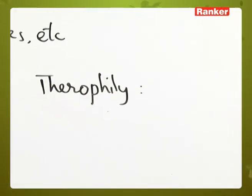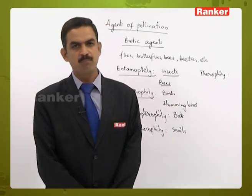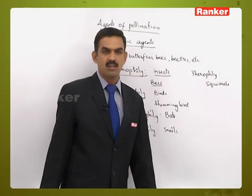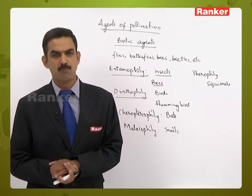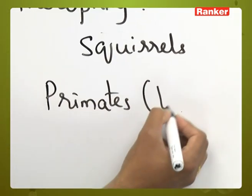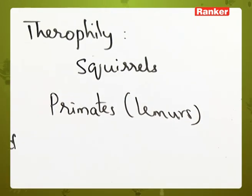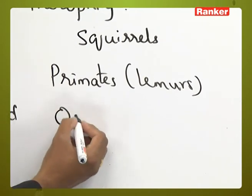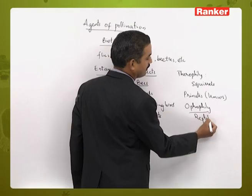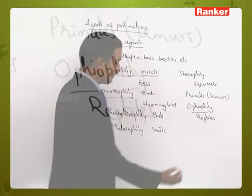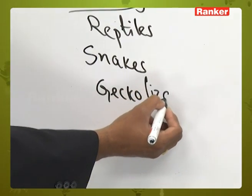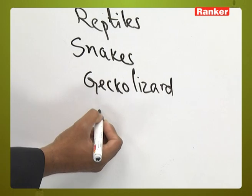Therophily involves plant-dwelling animals (arboreals) such as squirrels helping in pollen transfer, as well as primates like lemurs. Ophiophily is pollination by reptiles; best examples include snakes, gecko lizards, and garden lizards, all of which help transfer pollen from anther to stigma.